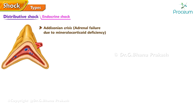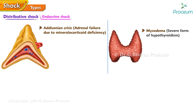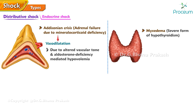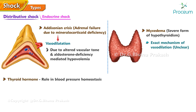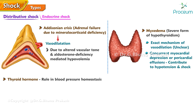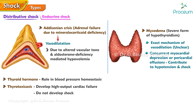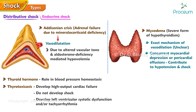Endocrine shock: Addisonian crisis, adrenal failure due to mineralocorticoid deficiency, and myxedema can be associated with hypotension and states of shock. In mineralocorticoid deficiency, vasodilation can occur due to altered vascular tone and aldosterone deficiency-mediated hypovolemia. Although thyroid hormone plays a role in blood pressure homeostasis, the exact mechanism of vasodilation in myxedema is unclear. Concurrent myocardial depression or pericardial effusions likely contribute to hypotension. Patients with thyrotoxicosis can develop high-output cardiac failure; with progression, left ventricular systolic dysfunction and tachyarrhythmia can lead to hypotension.